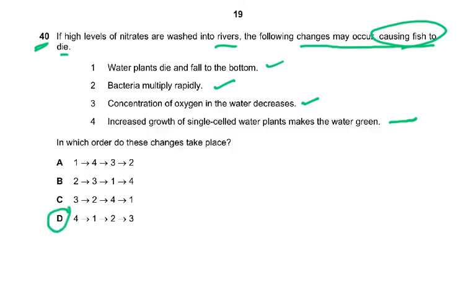The answer is D — four steps: increased growth of single-celled water plants making the water green; water plants die and fall to the bottom; bacteria multiply rapidly due to dead organic matter; bacterial aerobic respiration uses up the oxygen in the water. That completes this paper — thank you very much.